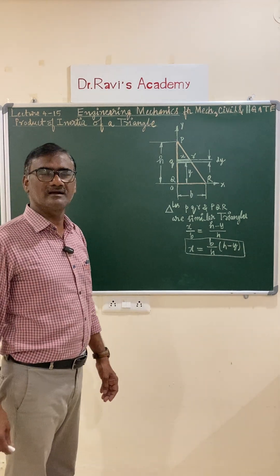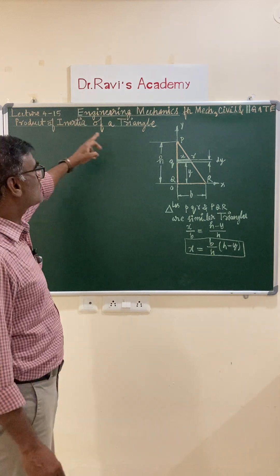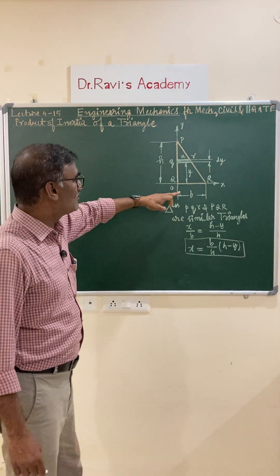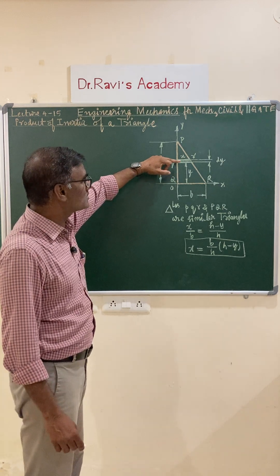Hello everyone, welcome to Dr. Ravi's Academy. In today's virtual class we'll be understanding the product of inertia of a right triangle with base b and height h. Let us consider an element, a horizontal strip at a distance y from the x-axis and elemental width is x.